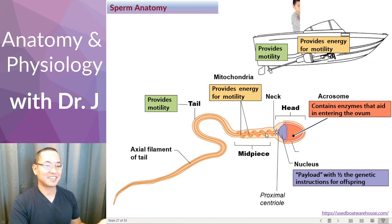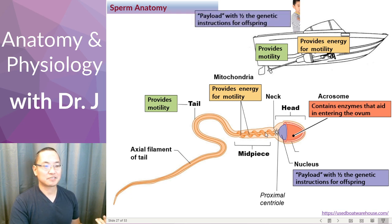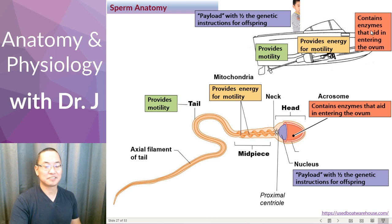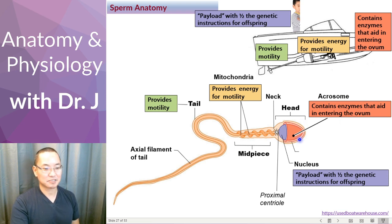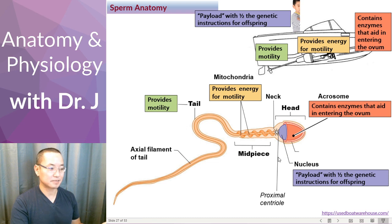Why am I only showing half a kid? Well, remember the payload is only half the genetic instructions of the offspring. And then you have enzymes. So if you're using this boat like a battering ram — this half of the kid wants to break into somewhere — he's going to ram that acrosome. So the acrosome is kind of like a battering ram, but on a chemical level. It helps to penetrate the outer layers of the ovum so they can finally deliver that genetic material.